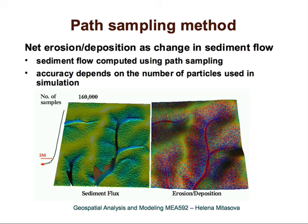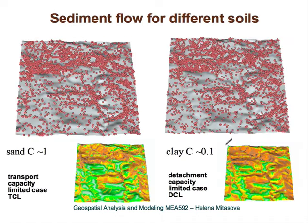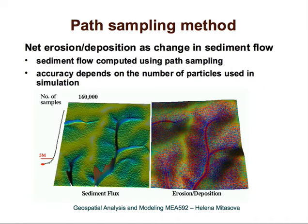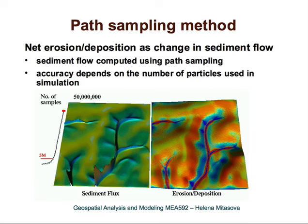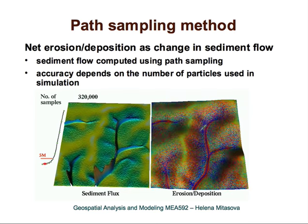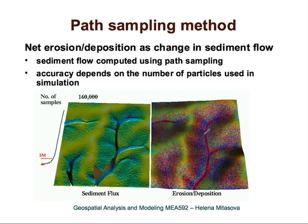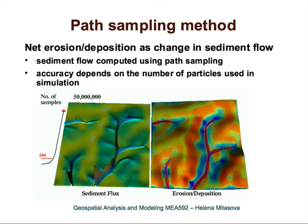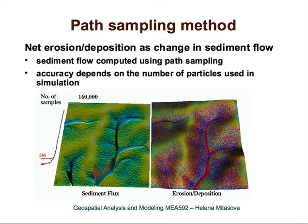If the surface is smooth, we get a nice net erosion and deposition result. As the surface gets smoother, the pattern really pops out. You can see a very nice simulation of alluvial cones — and again, that is what you get when using bivariate equations.